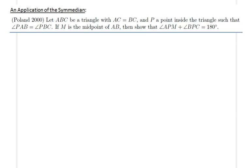Hello everyone, in this lecture we will be solving an application of the symmedian lines. This is an Olympiad problem from Poland in 2000. We are given a triangle ABC such that AC is equal to BC, so we have an isosceles triangle.